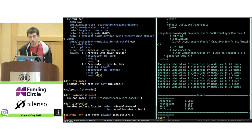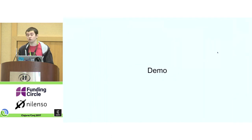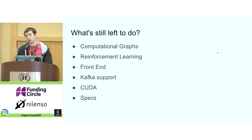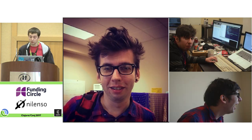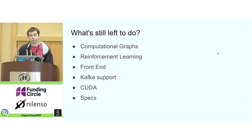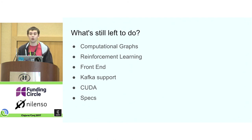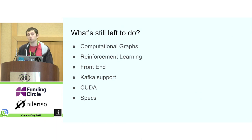I find this way of working with DL4J much more enjoyable and manageable. There are still things left to do: besides the basic neural network DSL, there are computational graphs for custom configurations, reinforcement learning, a front end for visualizing training, Kafka support, CUDA support, and I want to add specs. As it stands now, we can get data in, train a model, and evaluate how well that model performs.